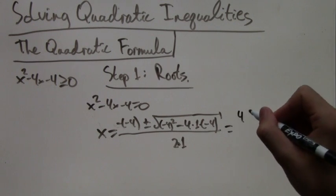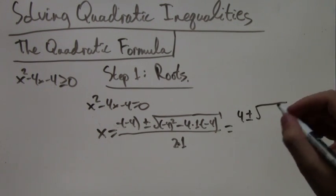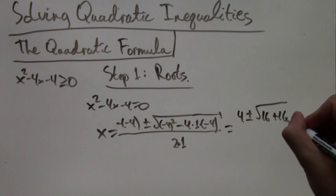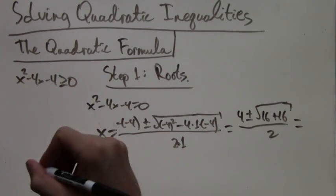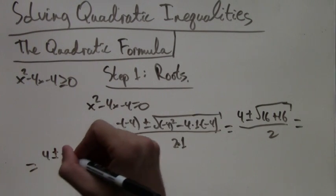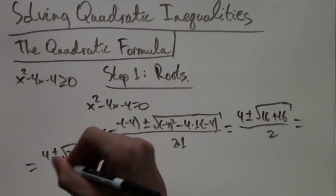But in any case, we can just apply it as we are right now. As we simplify, we're going to be at 4 plus or minus the root of 16 plus 16 over 2, and this is 4 plus or minus the root of 32 over 2.